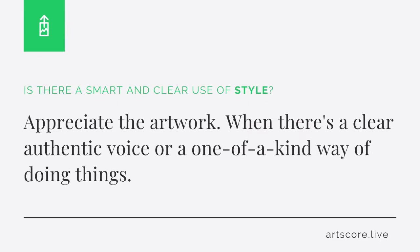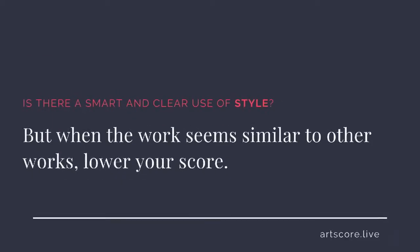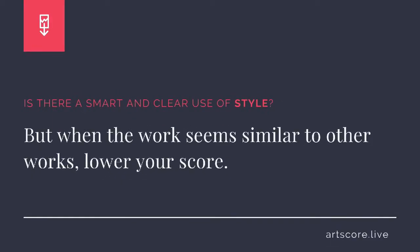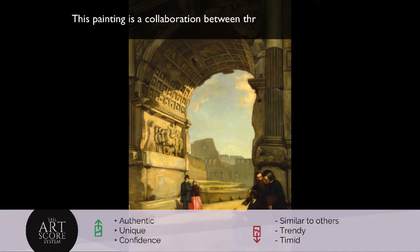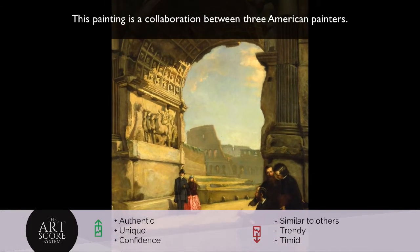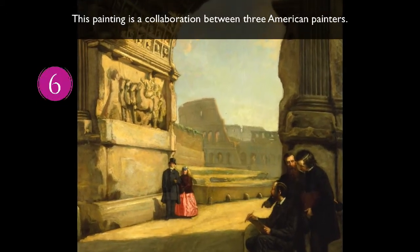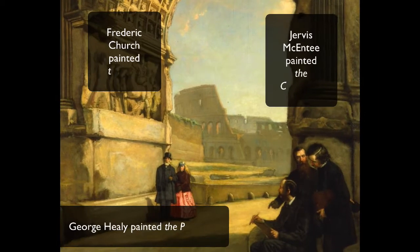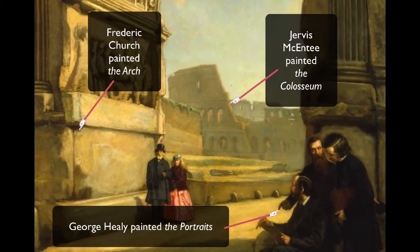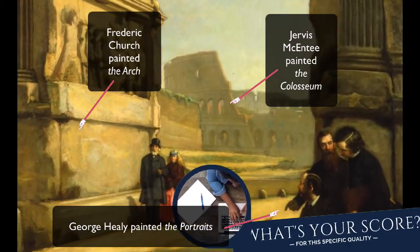Style. Is there a smart and clear use of style? Appreciate the artwork when there's a clear, authentic voice, or a one-of-a-kind way of doing things. But when the work seems similar to other works, lower your score. I scored the work a 6. I feel there's a confidence in how they're communicating their vision. What's your score?